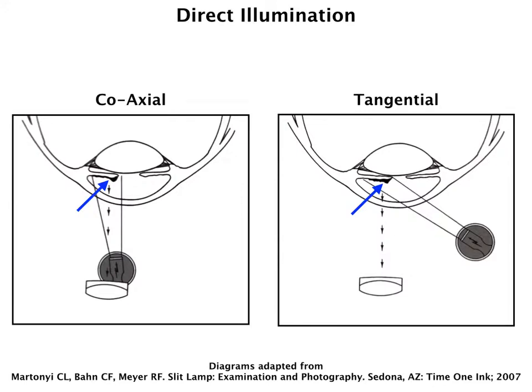Two similar techniques are the coaxial and the tangential. Usually it uses a wide open slit beam or a diffuse light. In the coaxial, the slit beam and the slit lamp are lined up, whereas in the tangential, the slit beam is at a very large angle in relation to the slit lamp. This helps to contrast skin lesions, iris lesions, cysts, or just a normal iris.